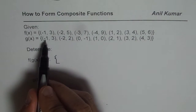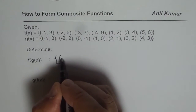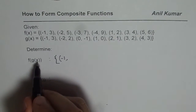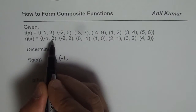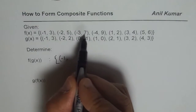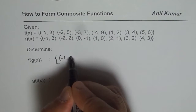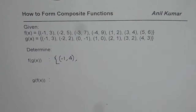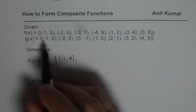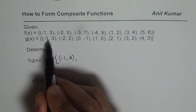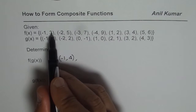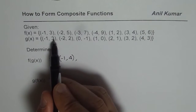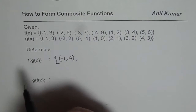Let's begin with the very first point, which is minus 1. g of minus 1 is 3. Now f of 3 is 4, so we get 4 as the output. We begin with the input from g of x, then the range of g of x becomes the domain of f of x. We can only find f of g if that value is in the domain of f of x, otherwise not.